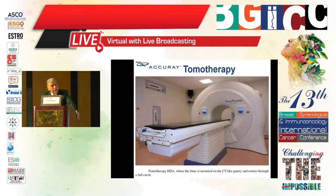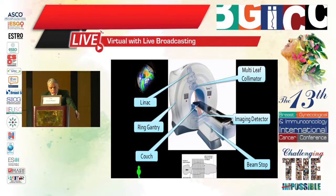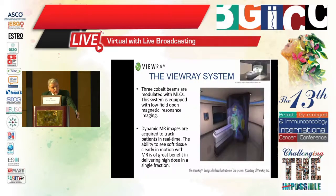One of the latest Accuray machines, released more than five or six years ago, is very effective. The concept is a donut for CT imaging with a multi-leaf collimator traveling all around to treat the patient and acquire images simultaneously — this is helical tomotherapy.